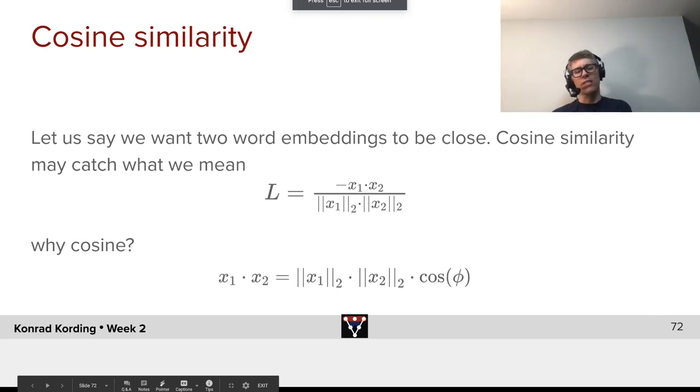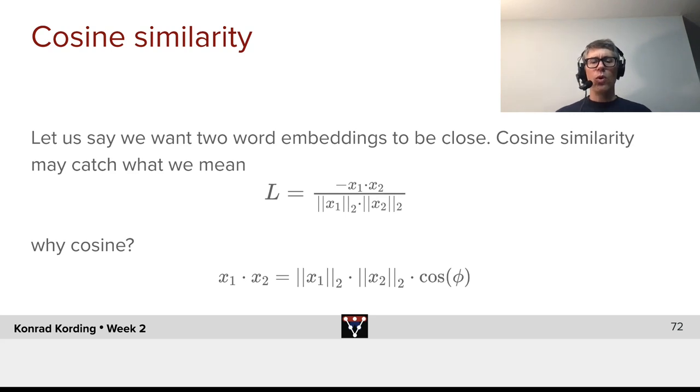So, let's get to another cost function: cosine similarity. Let us say we want two word embeddings to be close. Maybe we have a reason to believe that the words mean something similar, for example, because they're being used by the same scientist or in the same document.